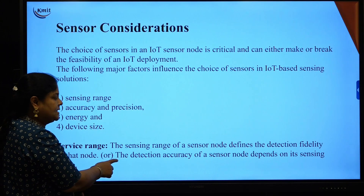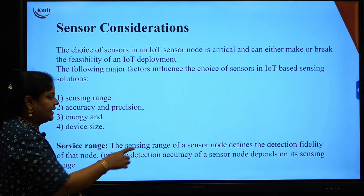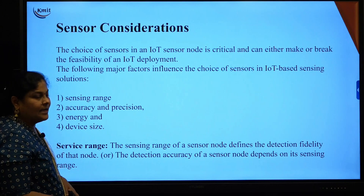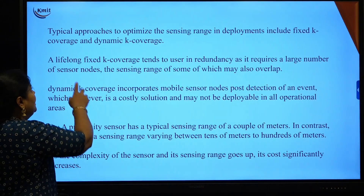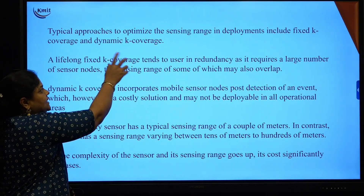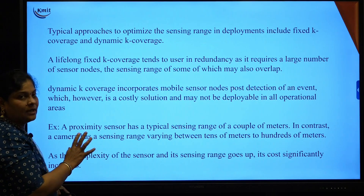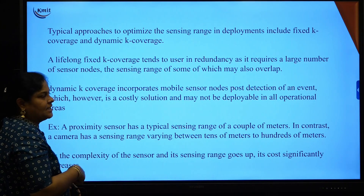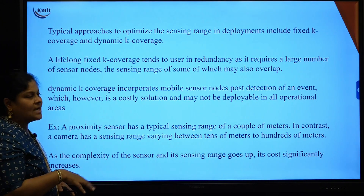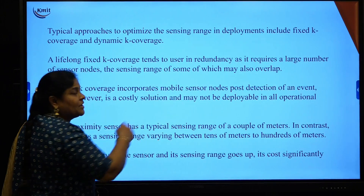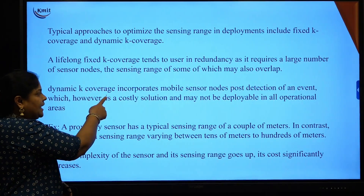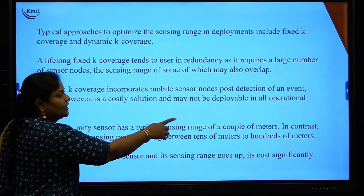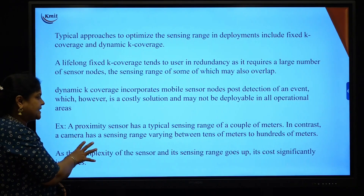Sensing range: the sensing range of a sensor node defines the detection fidelity of that node — meaning the detection accuracy of a sensor node depends upon its sensing range. Typical approaches to optimize the sensing range are fixed k-coverage and dynamic k-coverage. Fixed k-coverage requires a large number of sensors, which may cause overlapping of sensor ranges. Dynamic k-coverage incorporates mobile sensor nodes but is a costlier solution that cannot be deployed in all operational areas.